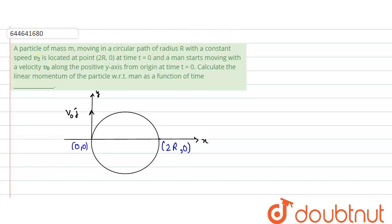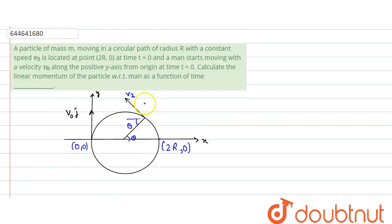At some instant, from the center of the circle the radius makes an angle theta, and the velocity v2 is tangential. We can resolve v2 into two components: one along the x-direction equals v2 cosθ, and one along the y-direction equals v2 sinθ.